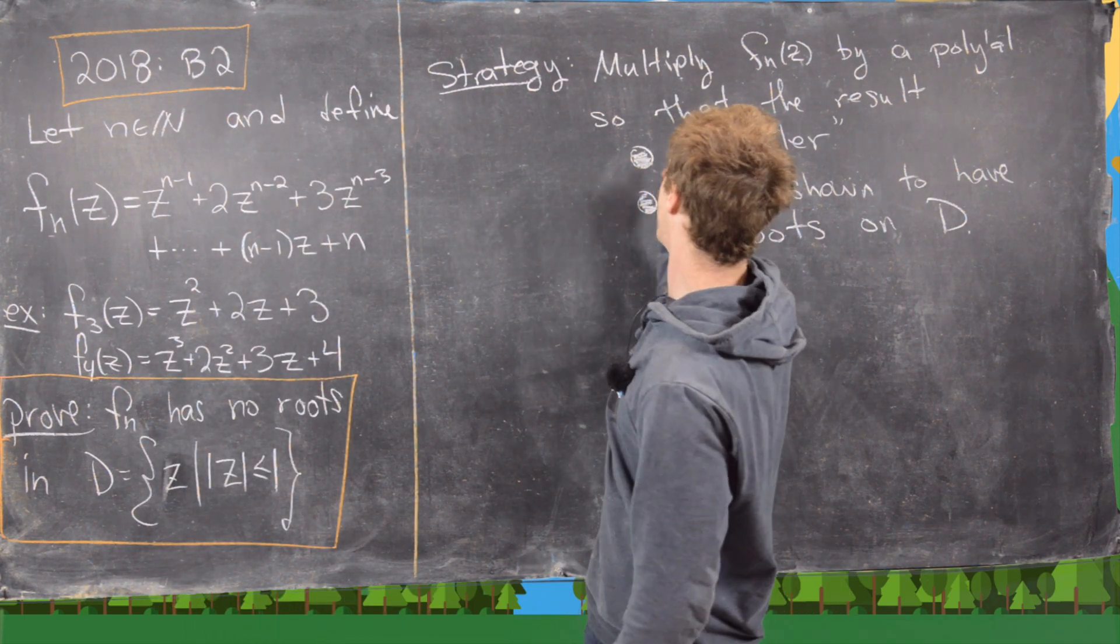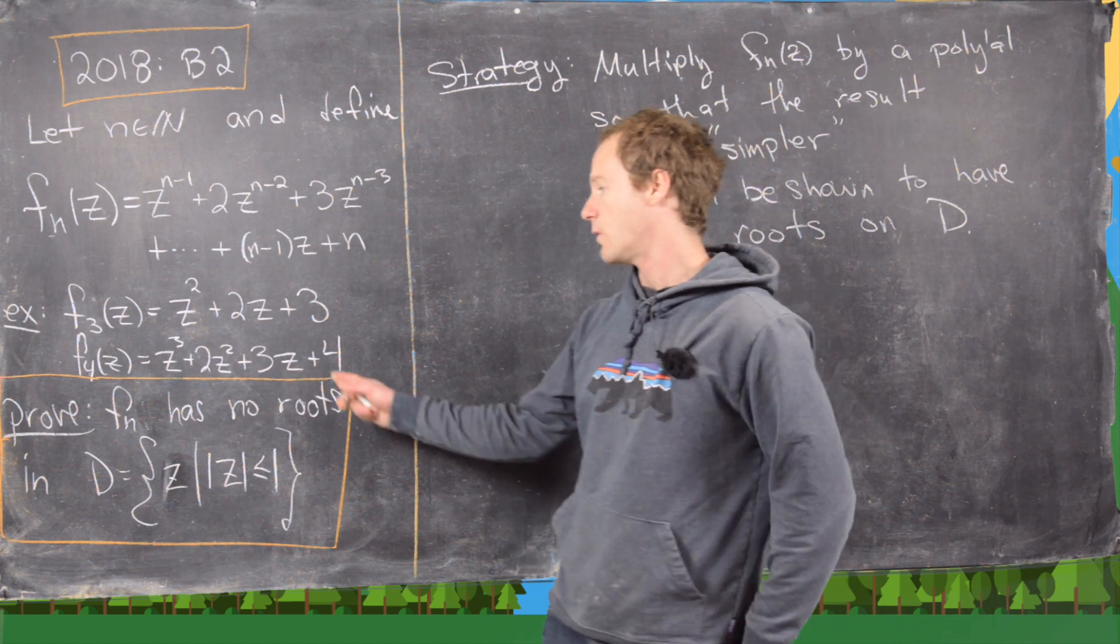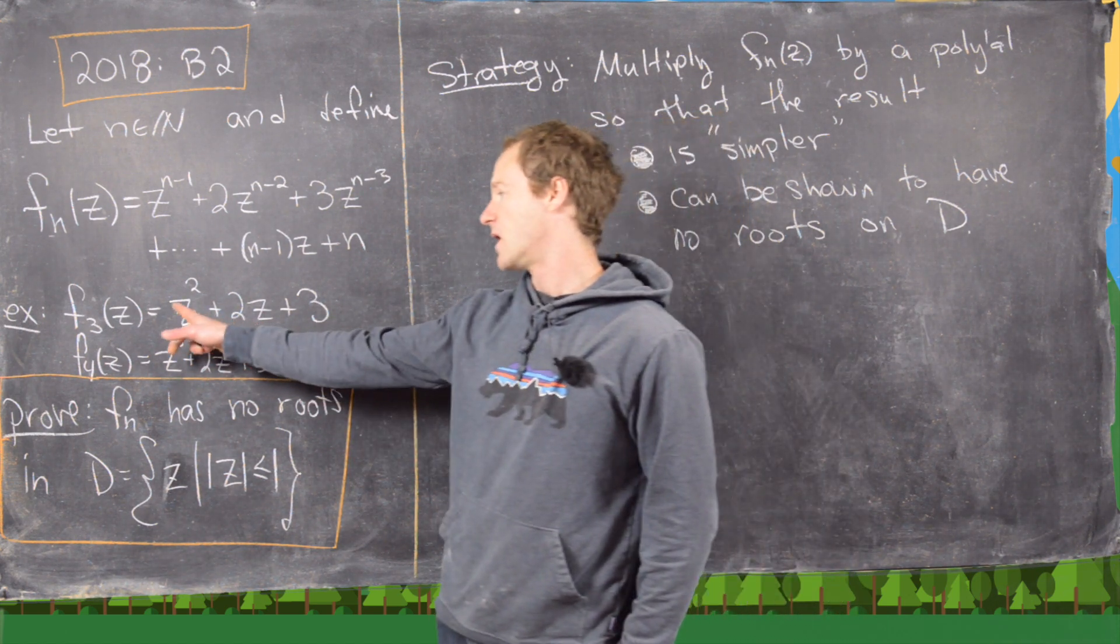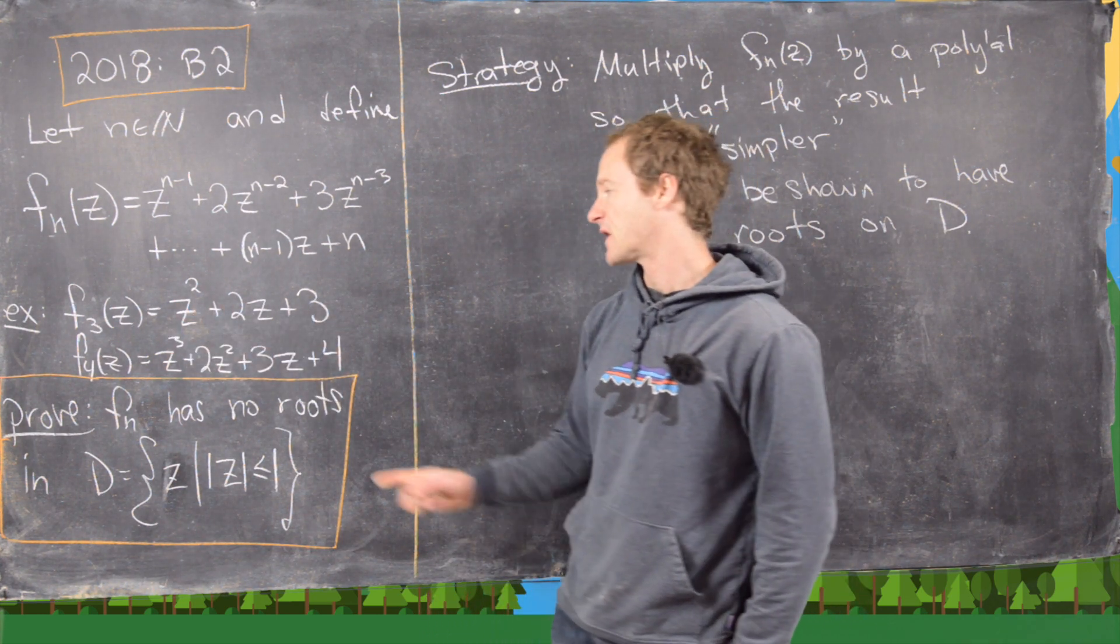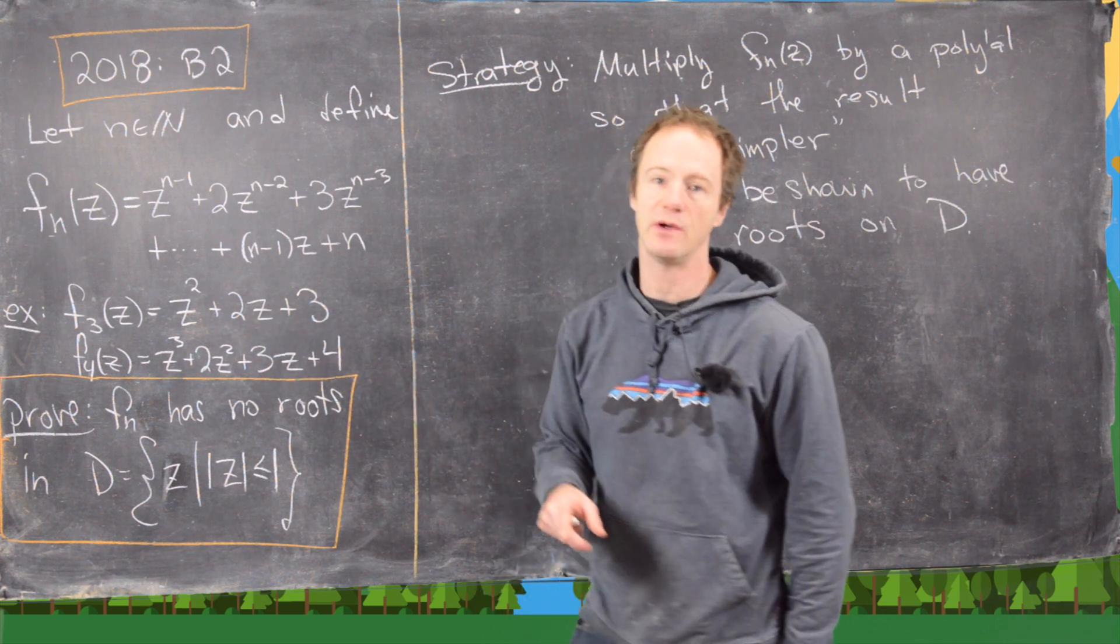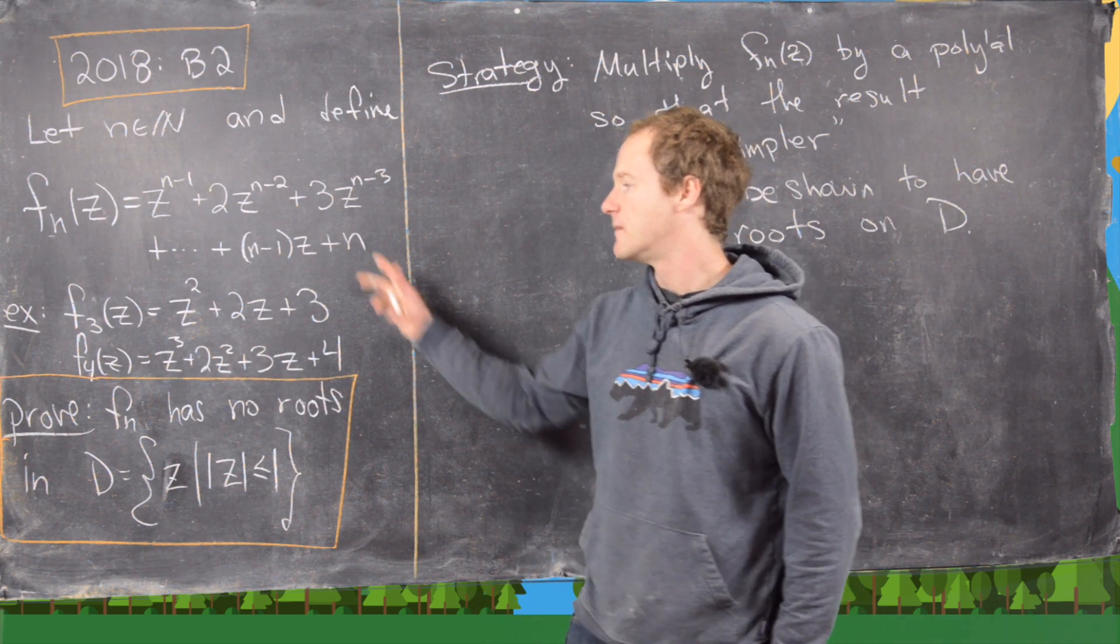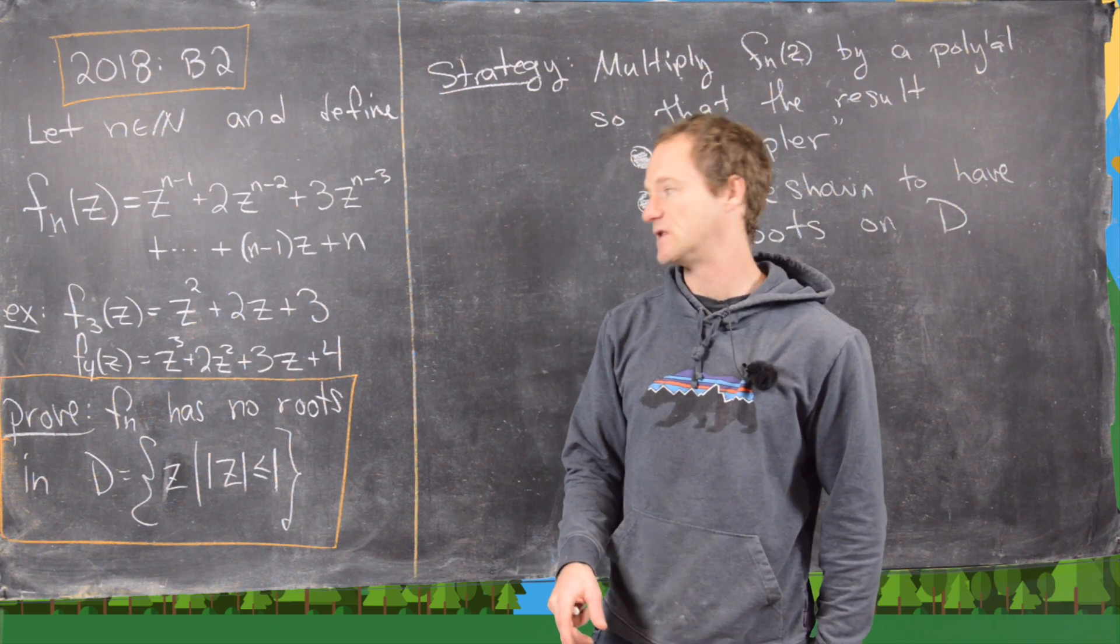As we look for a polynomial to multiply fn by that makes it simpler, we can notice that the coefficients of the powers of z increase as we go from larger exponents to smaller exponents of z. So if we were able to somehow subtract 3 from 2, we would end up with 1; 4 from 3, we would end up with 1. Again, 3 from 2, we would end up with 1. So maybe we can somehow construct a polynomial that would allow us to do that.